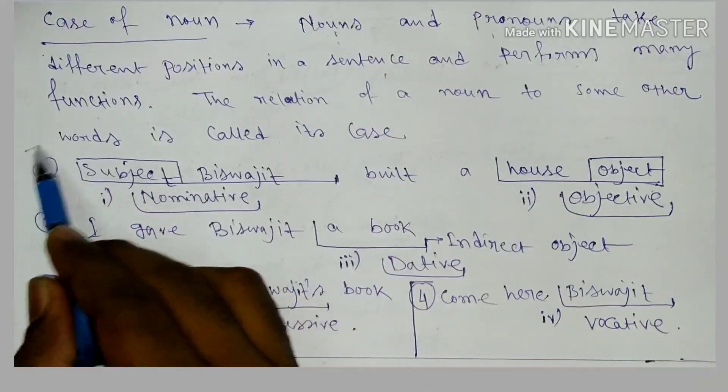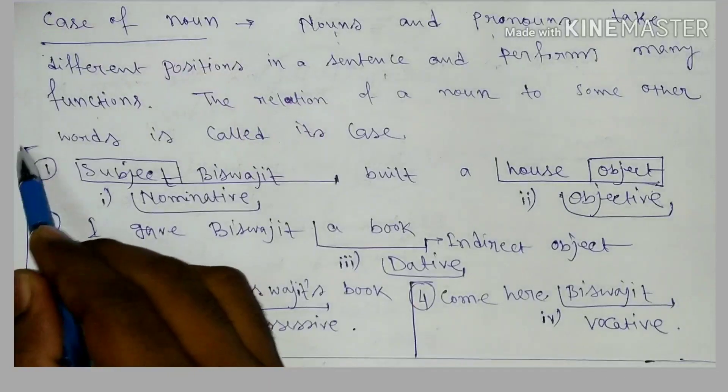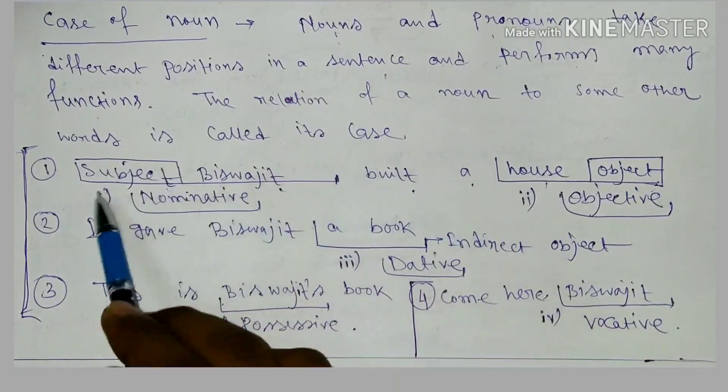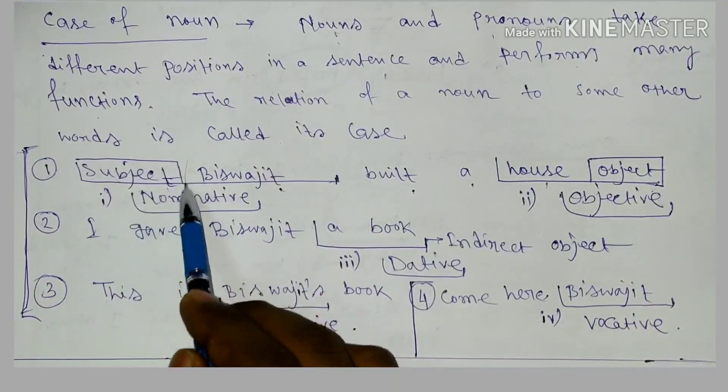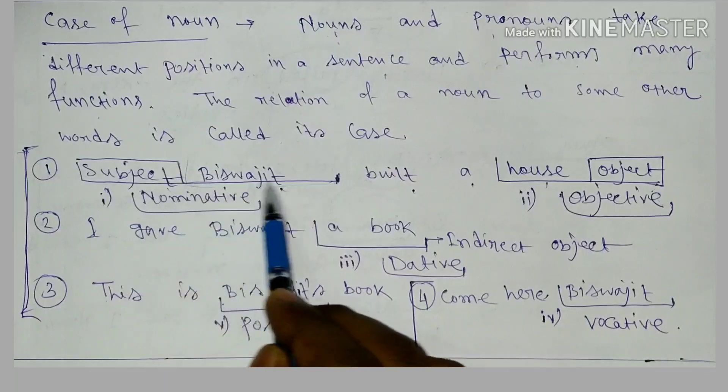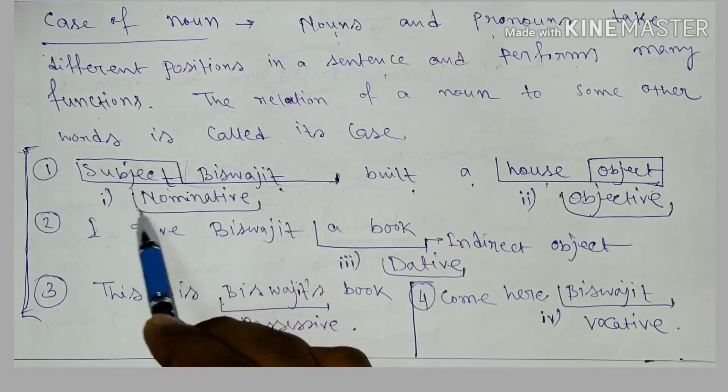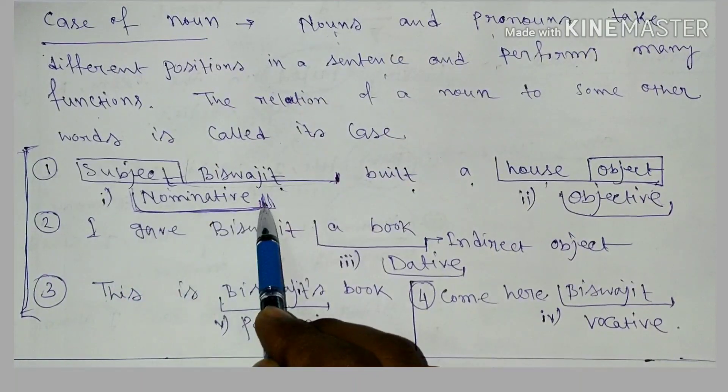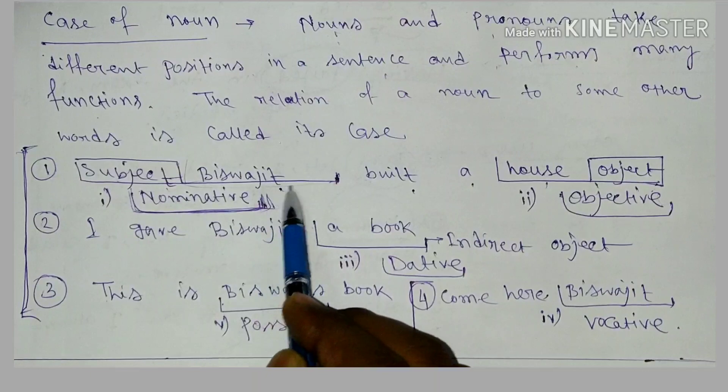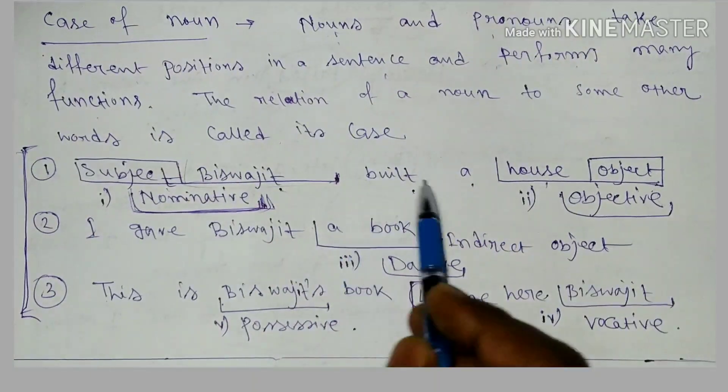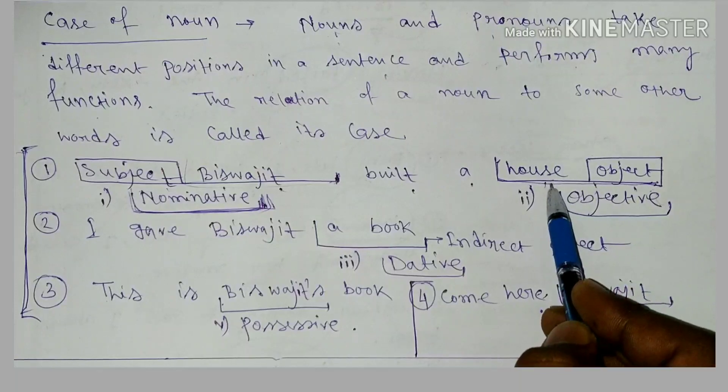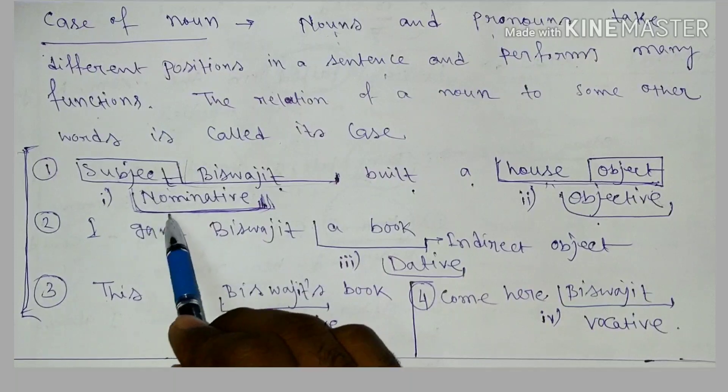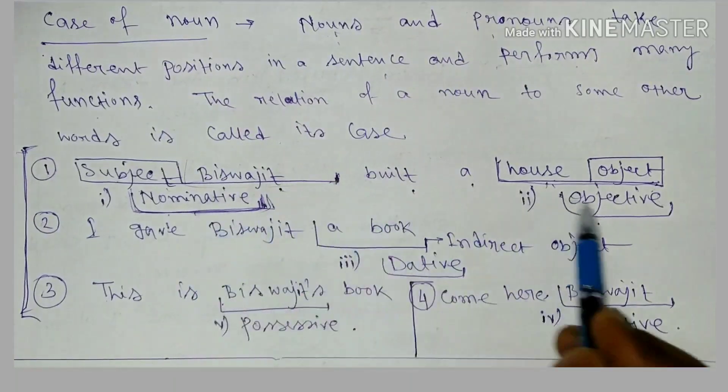The first example is: Sojit built a house. In the first sentence, the first word, the subject is Sojit. This is a noun, and when you use the noun first as the subject you use nominative. It's a nominative case. But in the latter position, Sojit built a house, house is the object and house is also a noun. So house is objective case. The first case is nominative case and the second case is objective case.